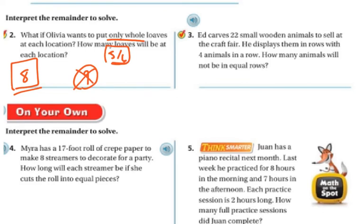I'm going to have you do the rest of these on your own, but I want you to think about it when you're interpreting whether you're going to do a whole number or whether you're going to do a fraction. So this one says, Ed carves 22 small wooden animals to sell at the craft fair. He displays them in rows with 4 animals in a row. How many animals will be in equal rows? So here, they don't want you to interpret it as a fraction because they want to know how many are in equal rows, right?